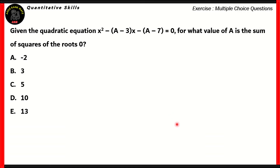Logical reasoning is one of the most important topics in the NMAT exam, so we need to be very attentive when it comes to solving them, like this one. Given the quadratic equation x squared minus (a minus 3) times x minus (a minus 7) equals 0, for what value of a is the sum of squares of the roots equal to 0?